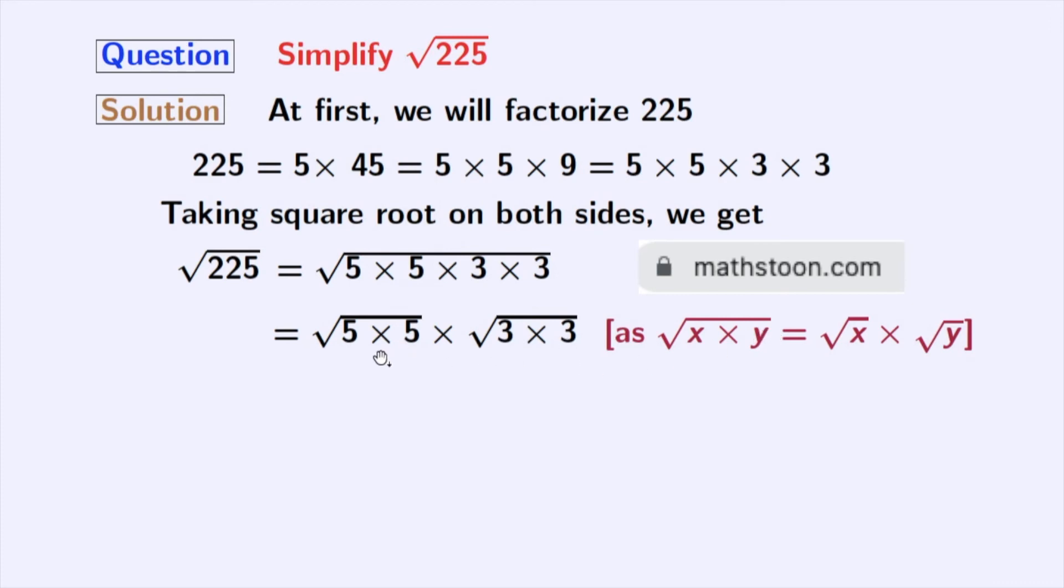Now from the first square root we get 5 and from the second square root we get 3. As we know that square root of a times a is equal to a. In the first square root a is 5 and in the second square root a is 3. After multiplication we get 15 and this is our final answer.